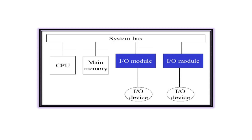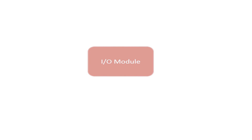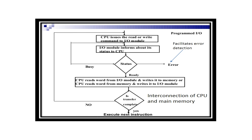The input-output model is the intermediate between the processor and input-output devices. It controls data exchange between main memory and input-output devices, or between CPU registers and input-output devices. The input-output model maintains the coordination between peripherals and CPU. It also provides an interface for internal interconnection of CPU and main memory, and external interconnection of the system with peripherals.